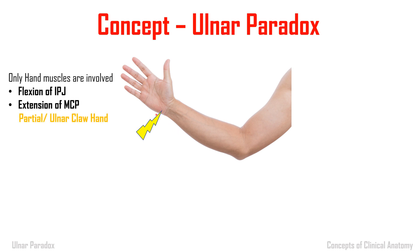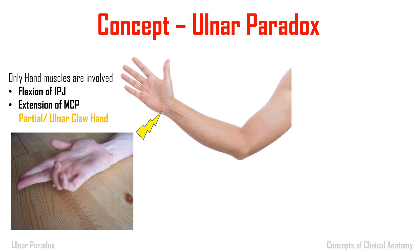Coming to the concept of ulnar paradox: when the ulnar nerve is injured at the level of the wrist, only the medial two lumbricals are paralyzed. As we have seen, when the lumbricals are paralyzed it leads to extension at the metacarpophalangeal joint and flexion at the proximal and distal interphalangeal joints, ultimately leading to a partial or ulnar claw hand.